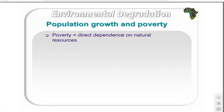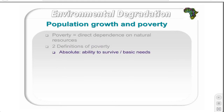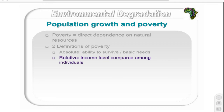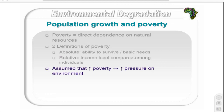Population growth and poverty: the state of poverty results in a direct dependence on natural resources and the environment for survival, especially in rural areas. In urban areas the link is less strong, but individuals are often forced to degrade the environment due to lack of services such as sanitation, water supply, and waste removal, and overpopulation on marginal land. There are two definitions of poverty: absolute poverty, defined as a minimum level of income, expenditure, or calories needed to meet basic survival needs; and relative poverty, defined in terms of comparable income levels where people below a set level are considered poor.